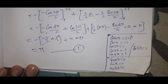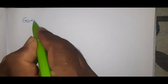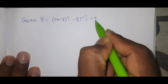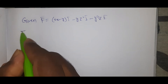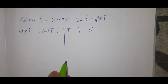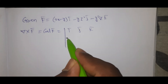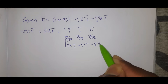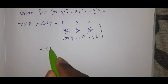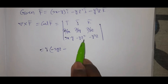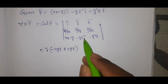Now for the RHS: the Stokes theorem formula is ∫C F̄·dr̄ = ∬S (curl F̄)·n̄ dS. We compute curl F̄ = ∇×F̄ using the determinant with ī, j̄, k̄ in the first row, ∂/∂x, ∂/∂y, ∂/∂z in the second row, and (2x-y), -yz², -y²z in the third row.